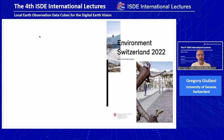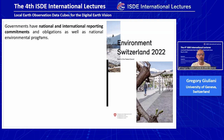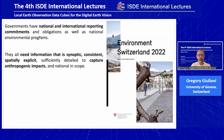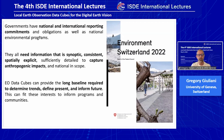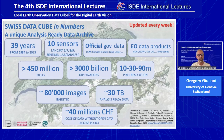Every government around the world has national and international reporting commitments. They need information that is synoptic, consistent, and spatially explicit so that we can really monitor anthropogenic impacts. We think that this data cube technology can provide the long baseline to determine trends: looking at the past to define the present status, and then by injecting satellite data into models, you can look at different scenarios and potentially inform the future. This is what we have done with colleagues from UNEP, the University of Zurich, and WSL at the federal level: we created the Swiss Data Cube to support our government with this analysis-ready data archive.